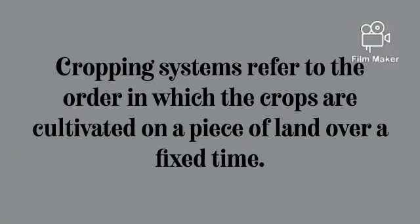What are cropping systems? Cropping systems refers to the order in which crops are cultivated on a piece of land over a fixed time — that is, the styles the farmers adopt in cultivating their crops.